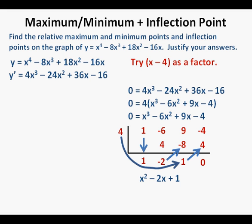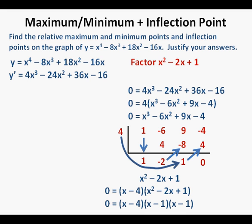With 0 as a remainder, we have as a quotient the trinomial x squared minus 2x plus 1. If it hadn't worked out to be a zero remainder, we could have tried x minus 1, x minus 2, or perhaps x plus 4. So we bring down the equation with x minus 4 factored out: 0 equals the quantity x minus 4 times the quantity x squared minus 2x plus 1. Factoring the trinomial gives 0 equals the quantity x minus 4 times the quantity x minus 1 times the quantity x minus 1.